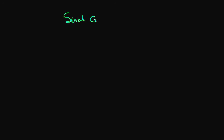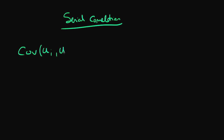In this video I'm going to be talking about the issue of serial correlation. What does it mean to have serially correlated errors? It means that the covariance of some error U_i with some other error U_s does not equal 0 for some i which does not equal s. In other words, there is some sort of common relation between two errors within our population. And remember that the assumption of no serial correlation was important for our Gauss-Markov assumptions.